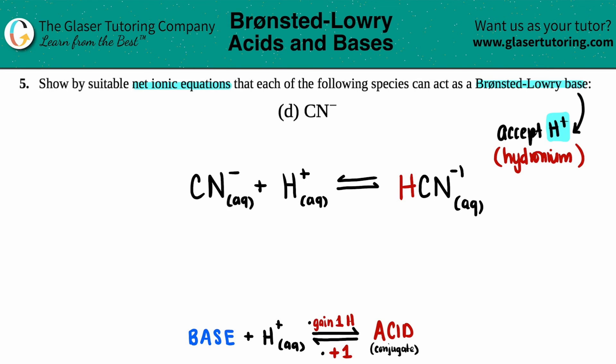So your CN was originally a negative one. So I'm going to say, okay, this was originally a negative one. But since I gained a H⁺, I'm just going to add one. Negative one plus one is zero.